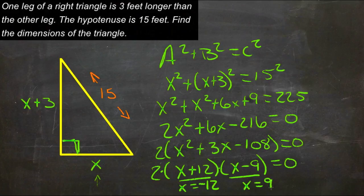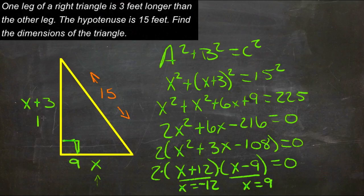Our two solutions then are negative 12 and positive 9. Now obviously it can't be a side length of negative 12, so it'd have to be a side length of 9. So if this one is 9 and this one is positive 12, then positive 12 squared is 144, and 9 squared would be 81.